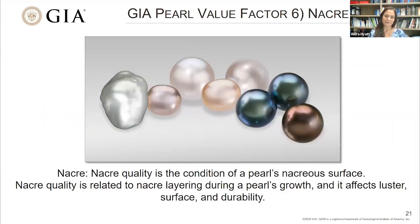The sixth pearl value factor is nacre. Nacre quality is the condition of a pearl's nacre surface. It is related to nacre layering during a pearl's growth and it affects luster, surface thickness, and durability. Nacre layering may be tight or loose, thin or thick, intact or damaged. The GIA classifies nacre simply as acceptable or unacceptable. Acceptable indicates that the nacre quality and thickness meets general industry standards, while unacceptable indicates that the nacre layering is poor or thin, or that the nacre is damaged or otherwise compromised.